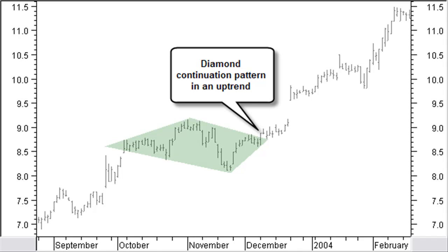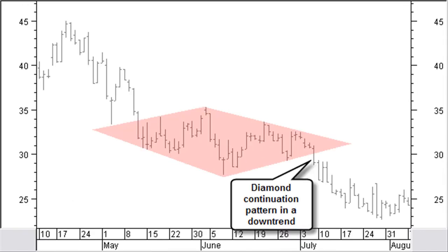The diamond formation is a combination of two triangles. The left is an inverted broadening triangle; the right side is a symmetrical triangle. Together they make up a diamond formation. This pattern is most common as a continuation pattern, but as we have seen in the previous video about reversal patterns, it can be a top or bottom reversal as well. Here you can see an example of a diamond continuation pattern in a downtrend.